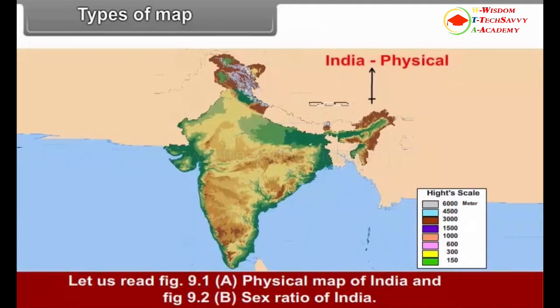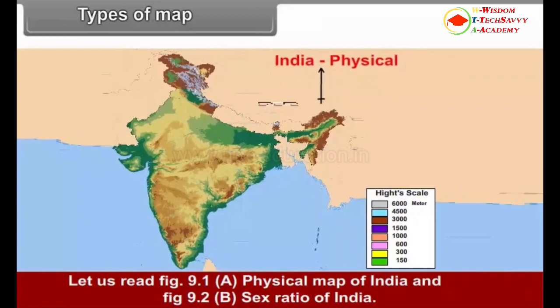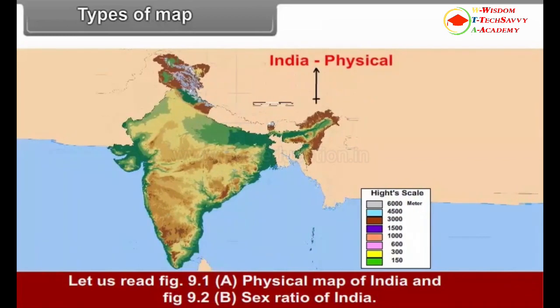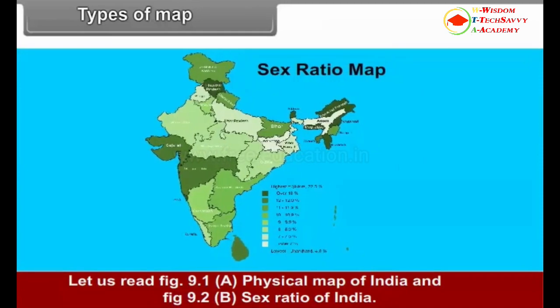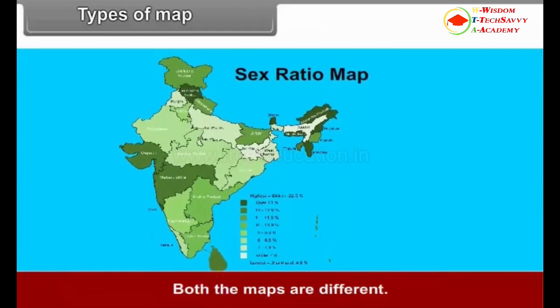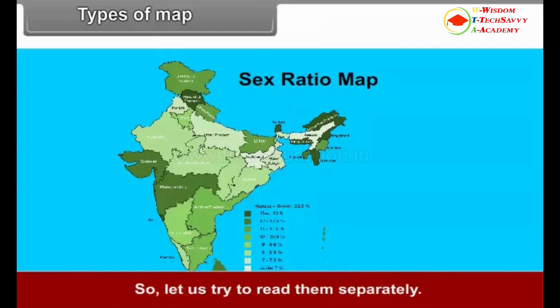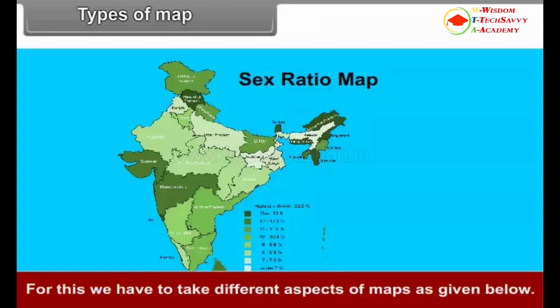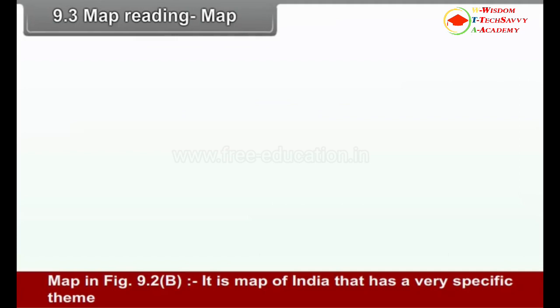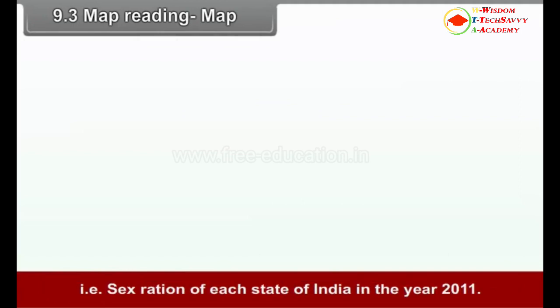Let us read Figure 9.1a, the Physical Map of India, and Figure 9.2b, Sex Ratio of India. Both maps are different, so let us try to read them separately by taking different aspects of maps. Map in Figure 9.2b is a map of India that has a very specific theme — the sex ratio of each state of India in the year 2011.